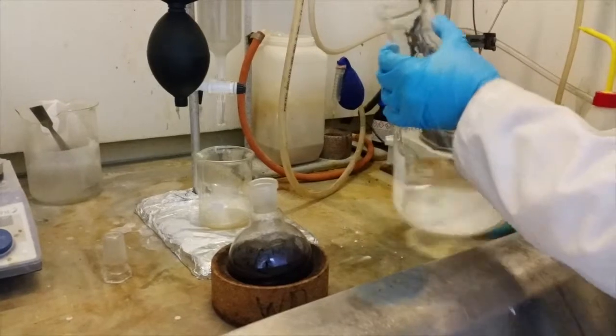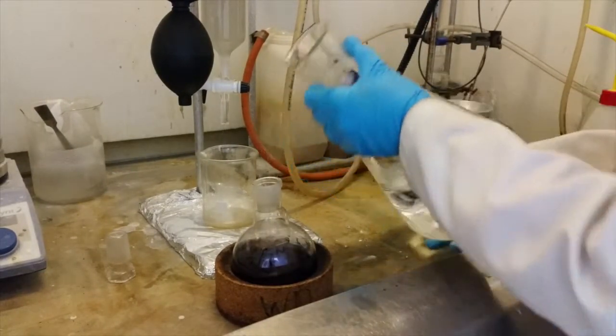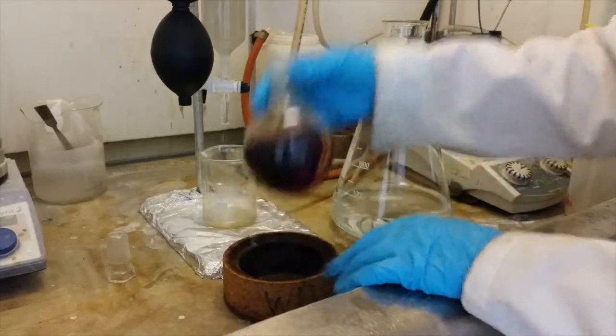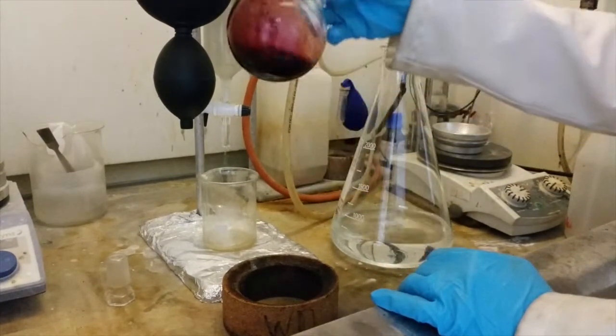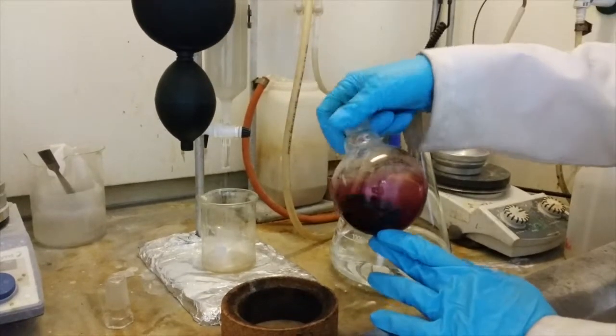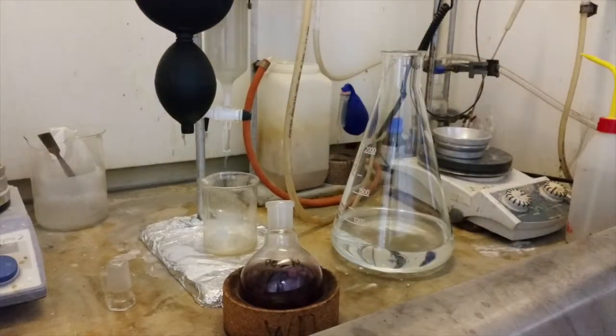While your column is running you need to prepare your crude sample. In order to do this you need to dissolve it in the minimum possible amount of the solvent that you're using. Make sure that you use enough solvent to fully dissolve your crude with no solid product remaining. However being sparing with your solvent use now means you'll get a better separation on the column later.